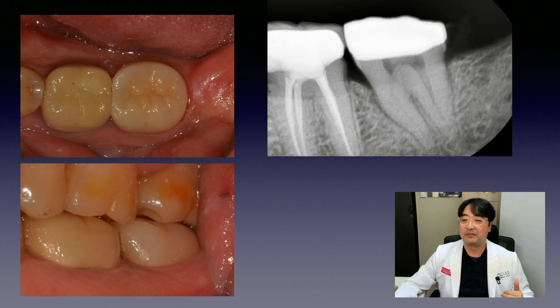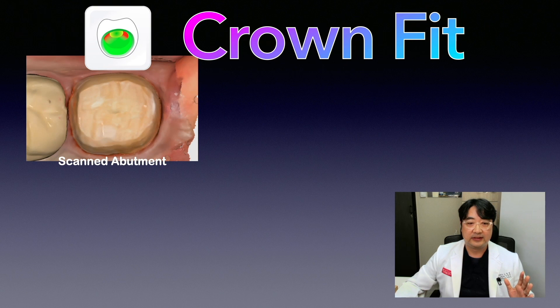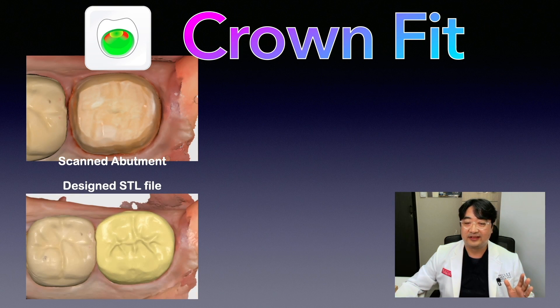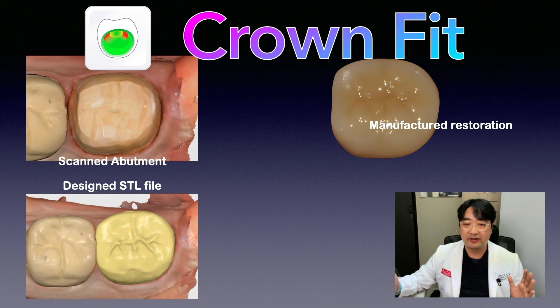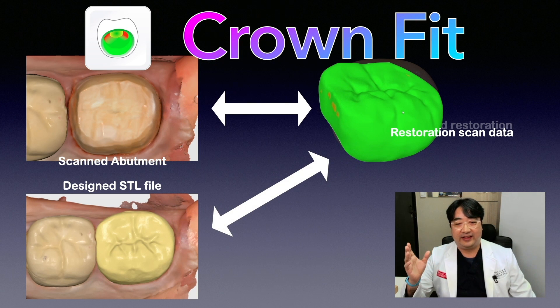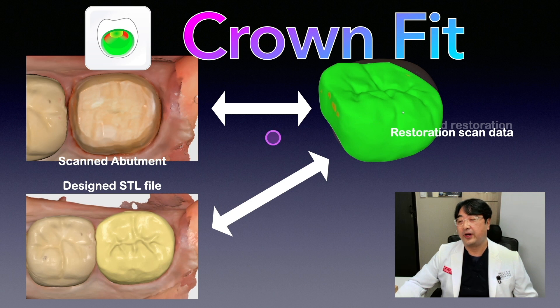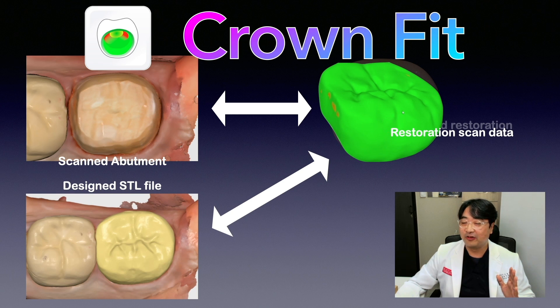So again, this is what CrownFit does. We have the scanned abutment, the designed STL file, and the manufactured real crown. We scan the real crown with the i500. With CrownFit, you can compare the STL and the crown to see the accuracy of manufacturing, and also compare the abutment tooth to the internal surface of the crown to assess how good the fit is.